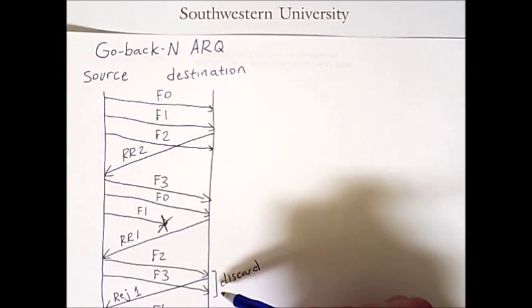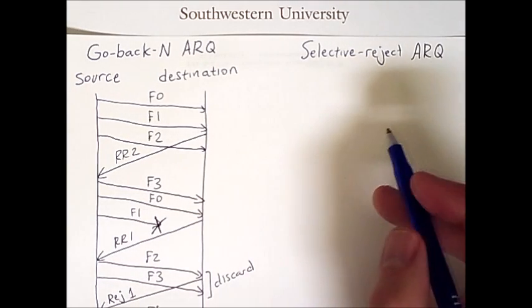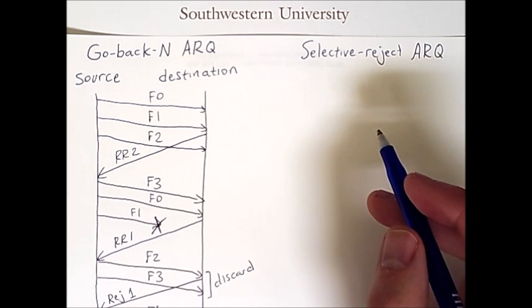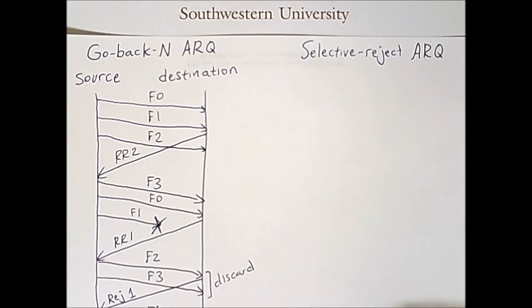An ARQ scheme that does not throw away these frames is selective reject ARQ. Selective reject ARQ is more complex and slightly more difficult to implement, but it makes more efficient use of the communication lines because it never throws away a frame that it has successfully received. It simply asks for the problematic lost frames to be resent, not all the ones that followed it.